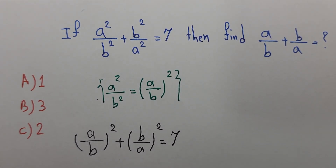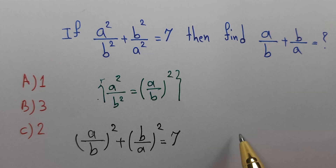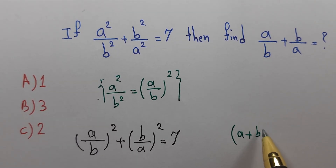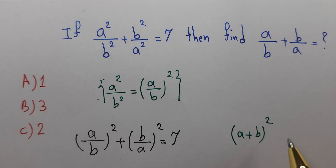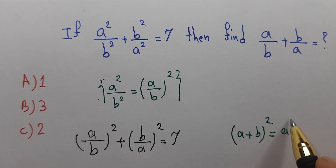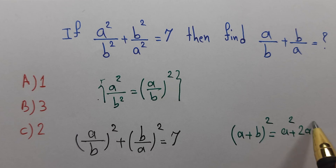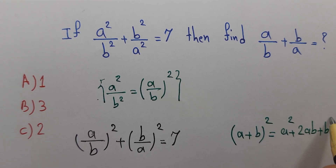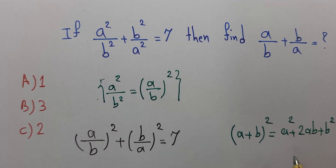We have an identity that (a + b)² equals a² + 2ab + b².